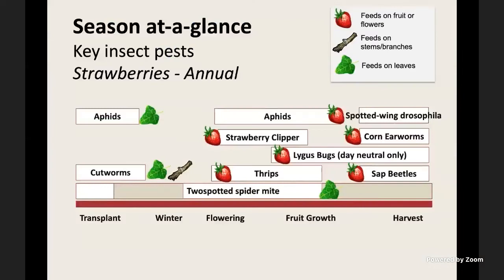When we look at a season at a glance, pests of strawberries starting at transplant: cutworms and aphids are important at this stage. In this slide, the leaf green shows they feed on leaves, strawberry shows they feed on fruit or flowers, and sticks show they feed on stems or branches. Cutworms feed on stems as well as foliage.